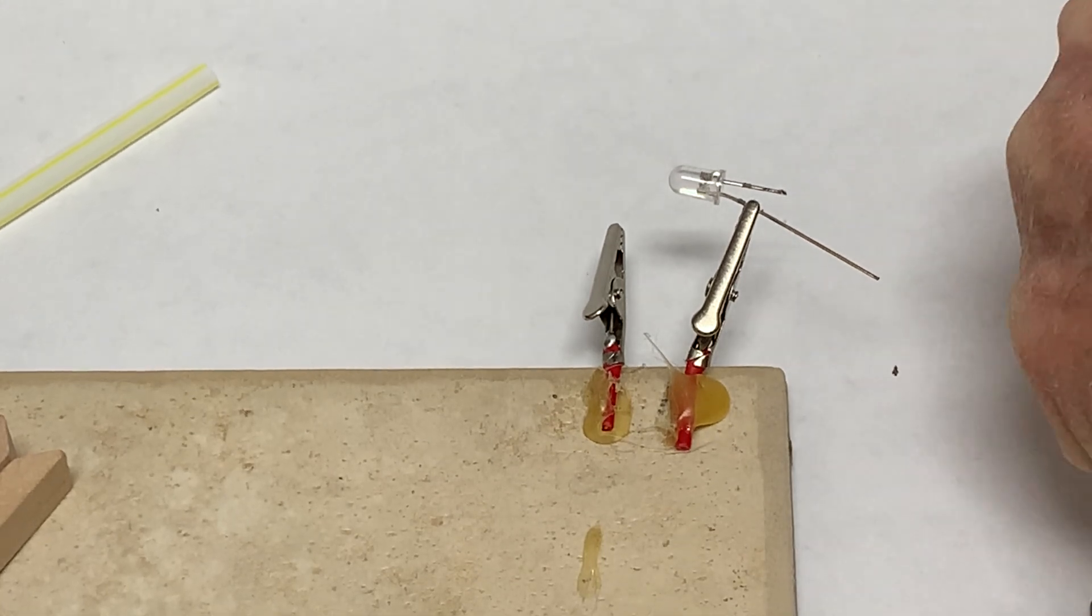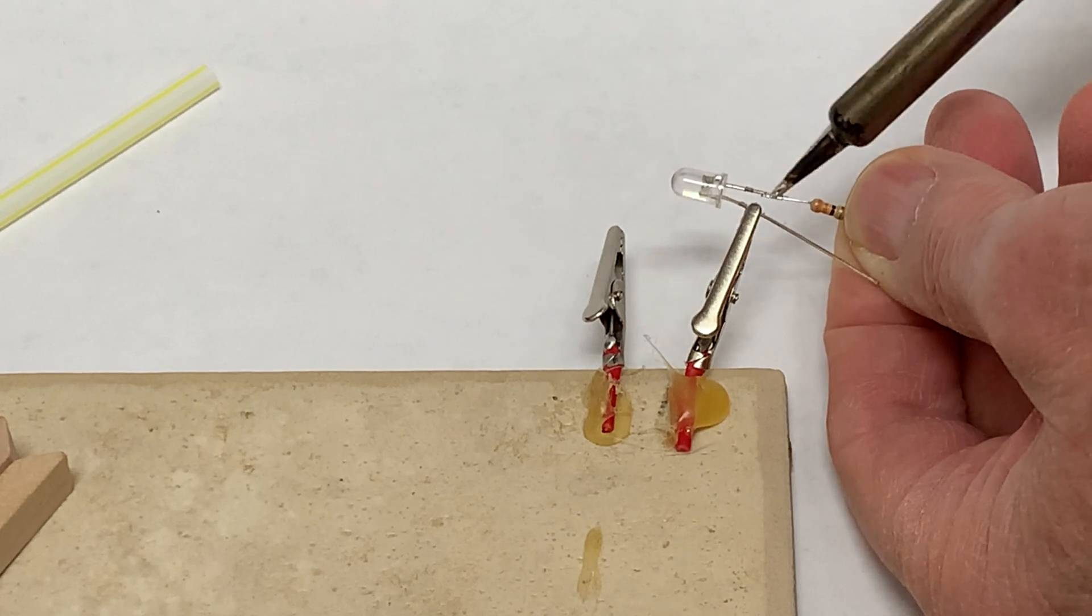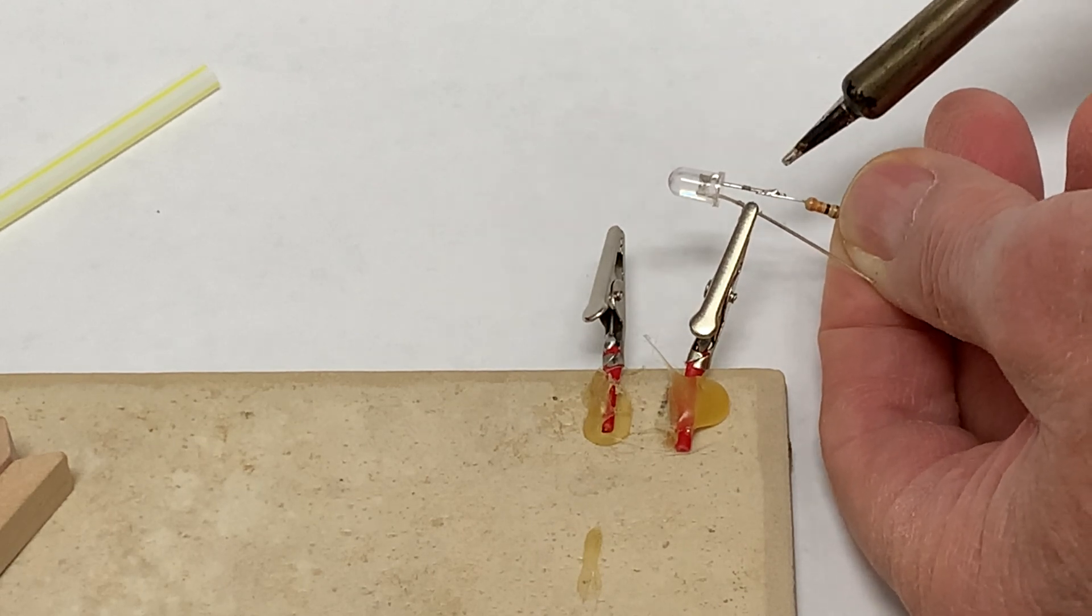Take the resistor, which in this case is a 330-ohm, just tack weld it there, tack solder it.